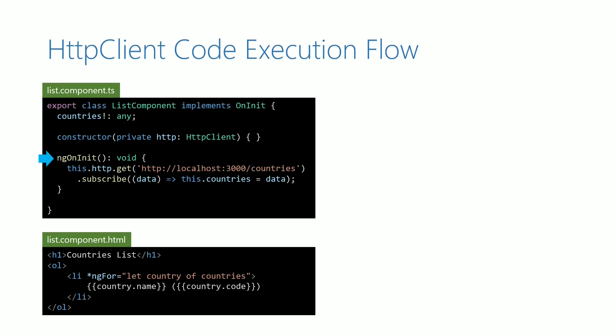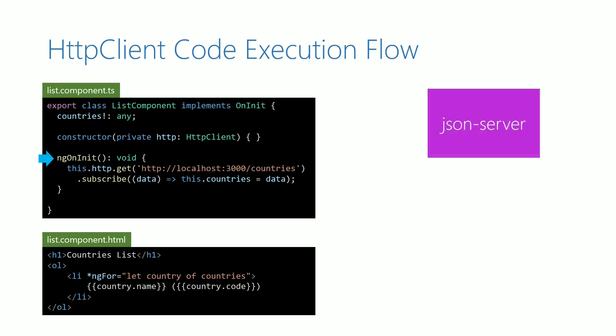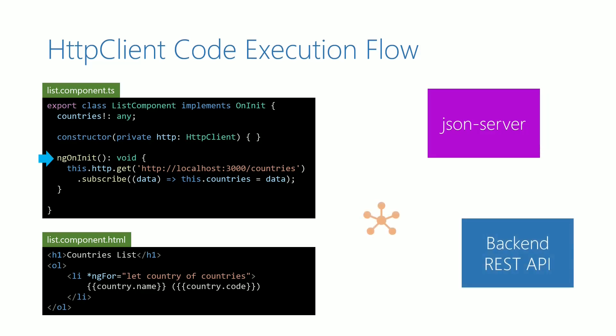In this example, we are using JSON server as the backend service, which is running on our desktop. In a real-time actual scenario, the REST API will be available in the network. When the network is involved, there will surely be a time latency. We may get the response in milliseconds, after a few seconds, a few minutes, or we may not get a response at all.